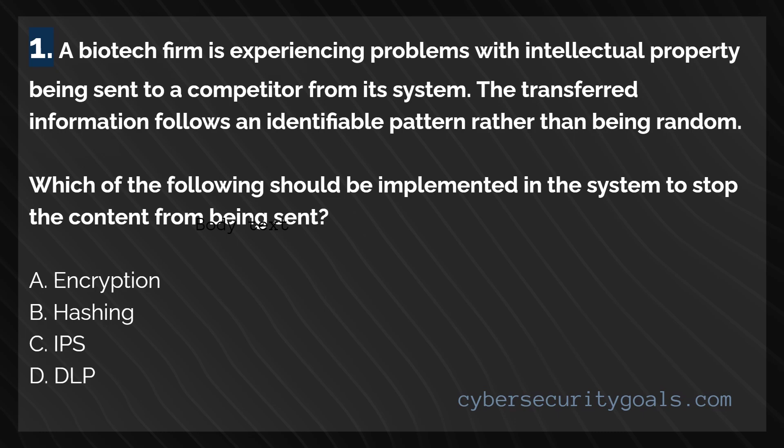Question 1. A biotech firm is experiencing problems with intellectual property being sent to a competitor from its system. The transferred info follows an identifiable pattern rather than being random. Which of the following should be implemented in the system to stop the content from being sent? Encryption, hashing, IPS, or DLP?